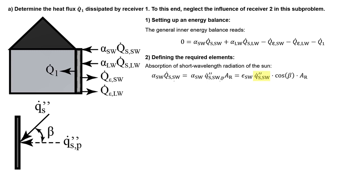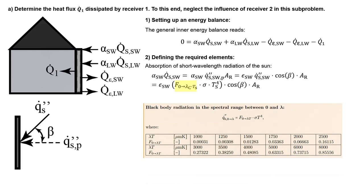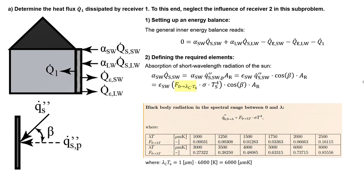We do not yet know which part of the irradiation spectrum of the sun falls within the short wavelength spectrum. The total spectrum can be seen as a black body, which yields from the Boltzmann constant multiplied by the temperature in Kelvin to the power of 4. Factor F tells us which part of this spectrum falls within the short wavelength region. To determine this factor, we use the table from the book, which describes black body radiation in the spectral range from zero to a specific wavelength. We determine the product of the cutoff wavelength and the temperature of the sun, which gives a value of 6000. Reading this table, we find that factor F has a value of about 0.74.